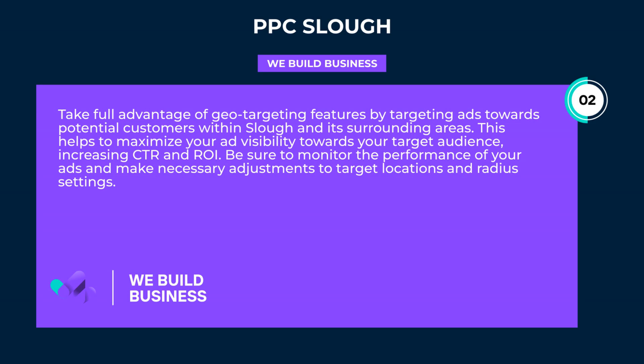Take full advantage of geo-targeting features by targeting ads towards potential customers within Slough and its surrounding areas. This helps to maximize your ad visibility towards your target audience, increasing CTR and ROI. Be sure to monitor the performance of your ads and make necessary adjustments to target locations and radius settings.